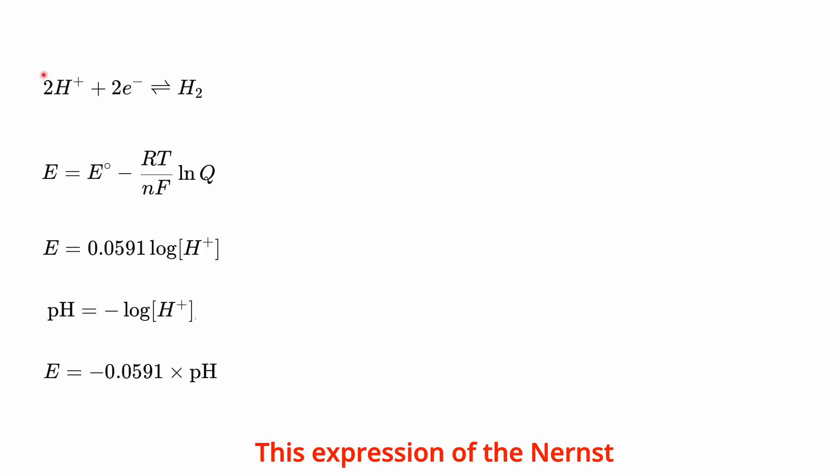This expression of the Nernst equation can be applied to an equilibrium involving hydrogen gas and hydrogen ions. If we do the maths, the equilibrium potential for this equilibrium at room temperature and under a hydrogen pressure of one atmosphere is minus 0.0591 times the pH value.